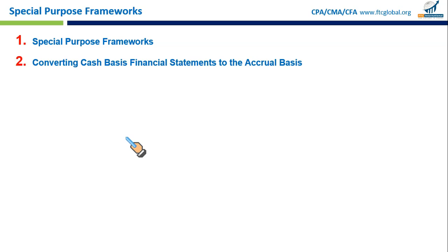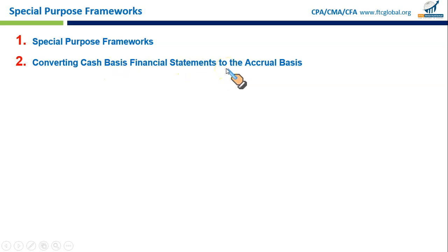We are going to cover two subunits within this module: special purpose frameworks and converting cash basis financial statements to the accrual basis. A special purpose framework is basically an accounting method used in place of normal GAAP — generally accepted accounting principles. They are also referred to as OCBOA, that is, Other Comprehensive Basis of Accounting.